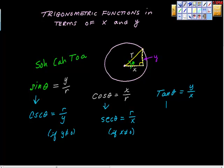And this is my favorite one because it makes perfect sense why it's reciprocal. The reciprocal of tan would be cotan. So this is cotan theta. Cotan theta is x over y. And again, if y is not equal to zero.